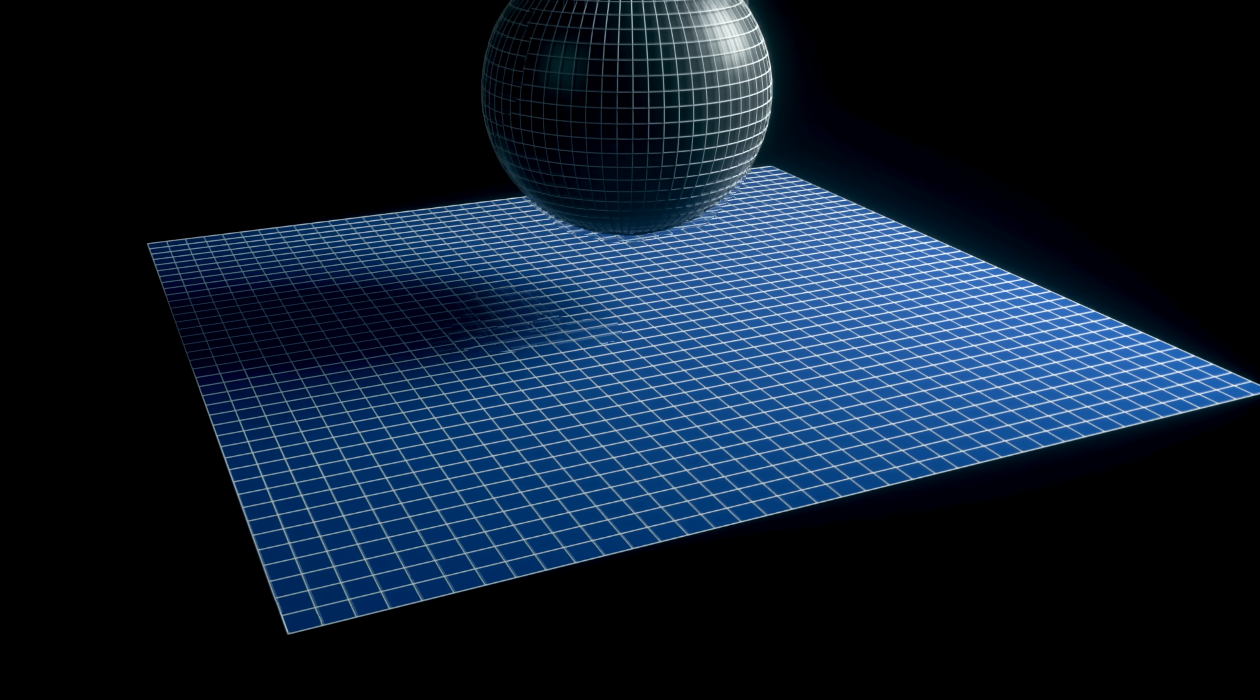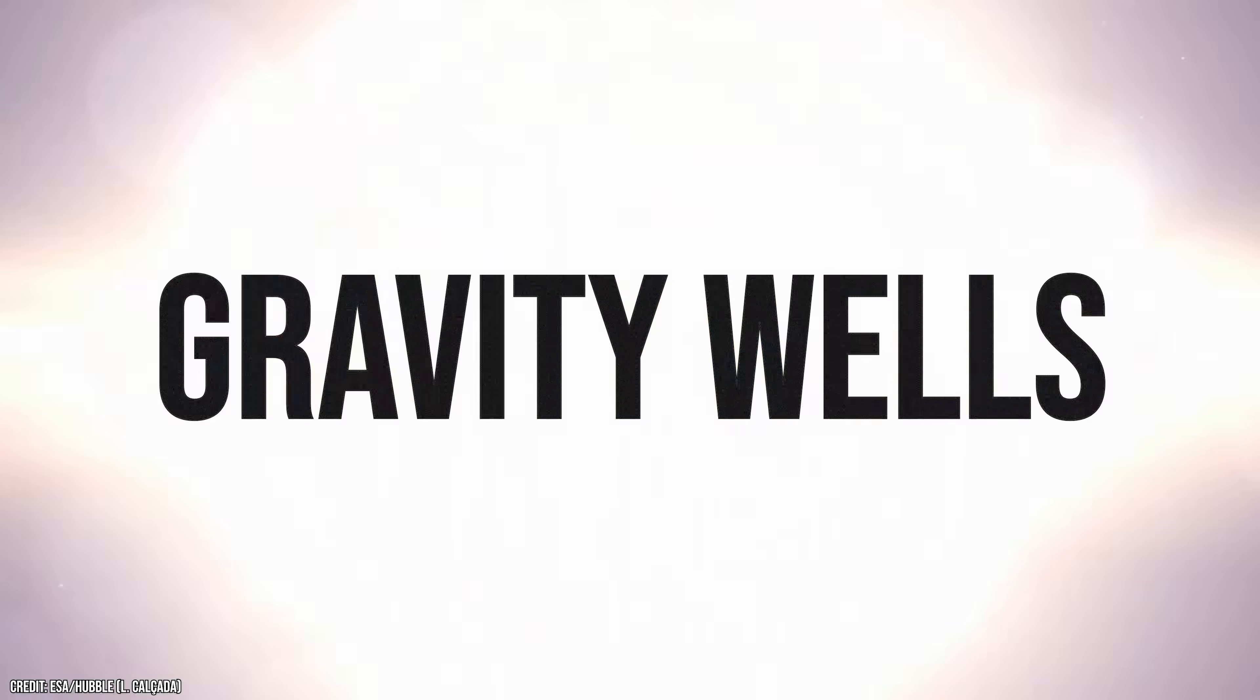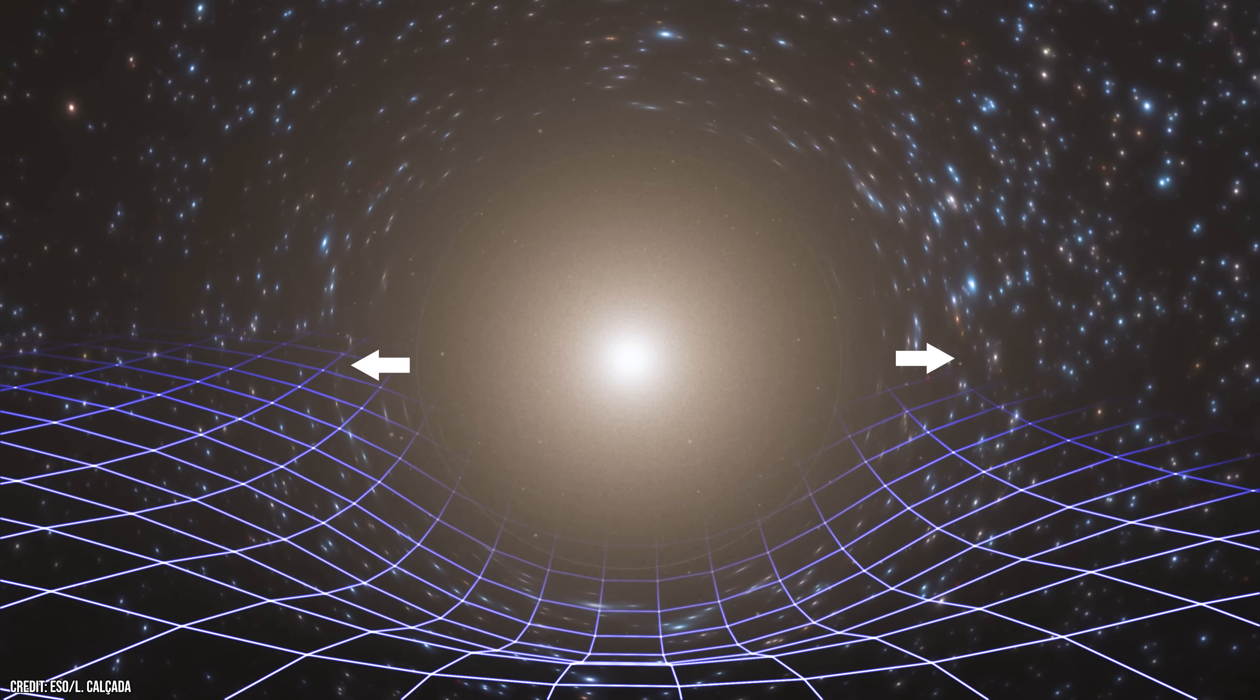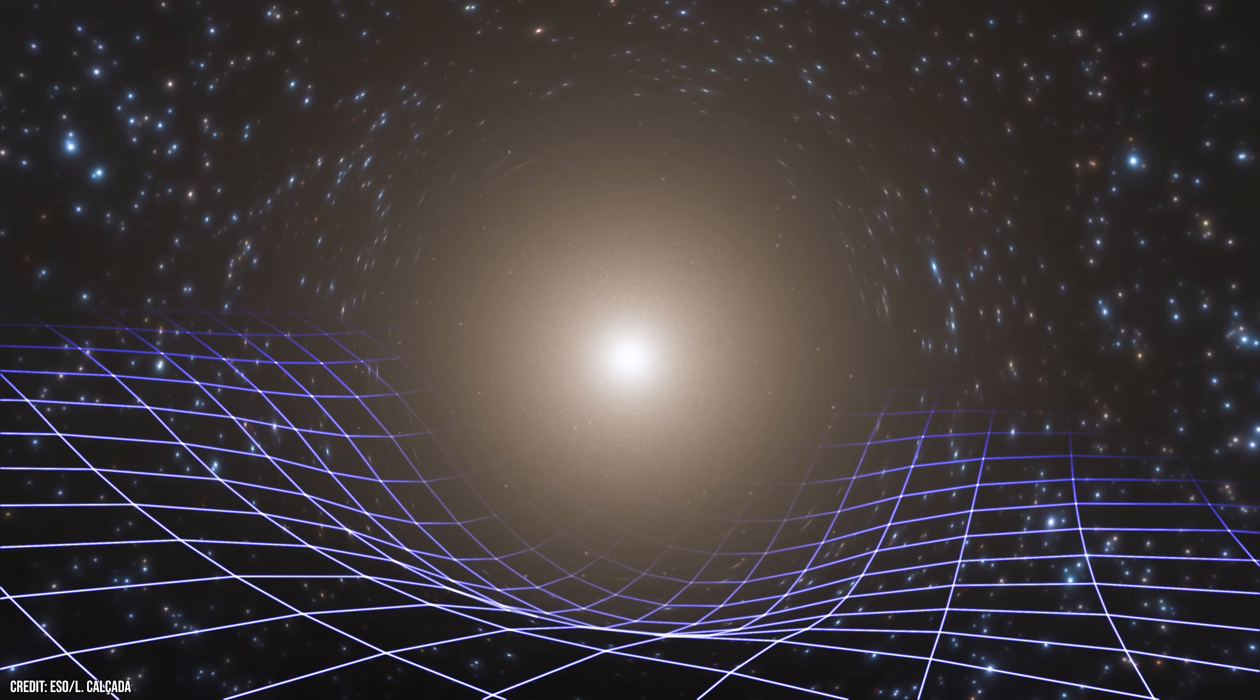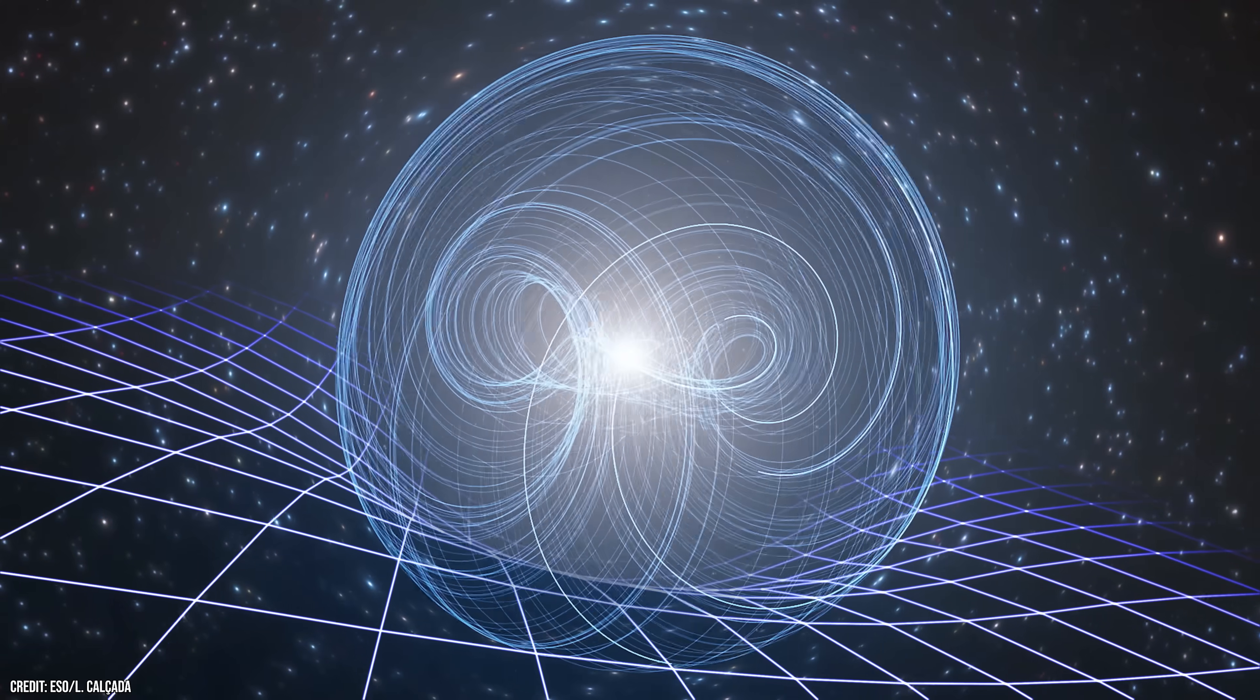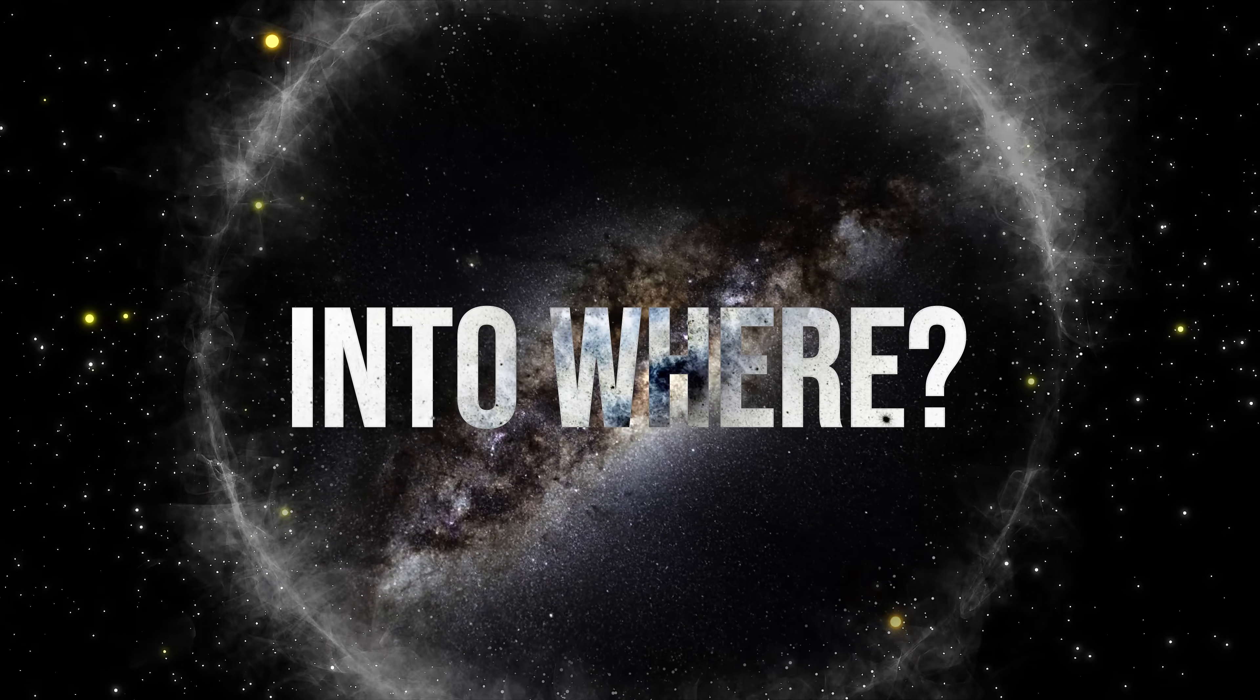The heavier an object is, the deeper the dip it makes in the sheet of space. Physicists call these dips gravity wells. When the biggest stars die, their cores collapse and create gravity wells so deep that clambering out of them would require you to travel faster than the speed of light. As far as we know, that's impossible. It is these inescapable gravity wells that are more commonly known as black holes. Another way of thinking about black holes is that they distort the fabric of space to such extremes that all exit routes actually curve back around. Like the labyrinth, all apparent paths out only send you deeper in. But into where exactly?